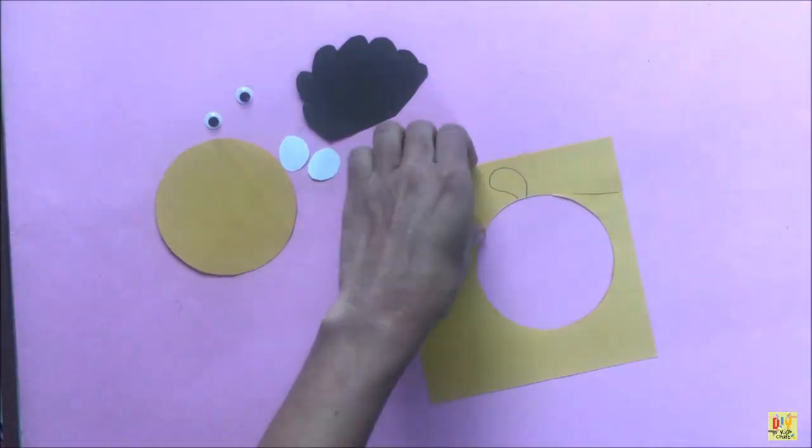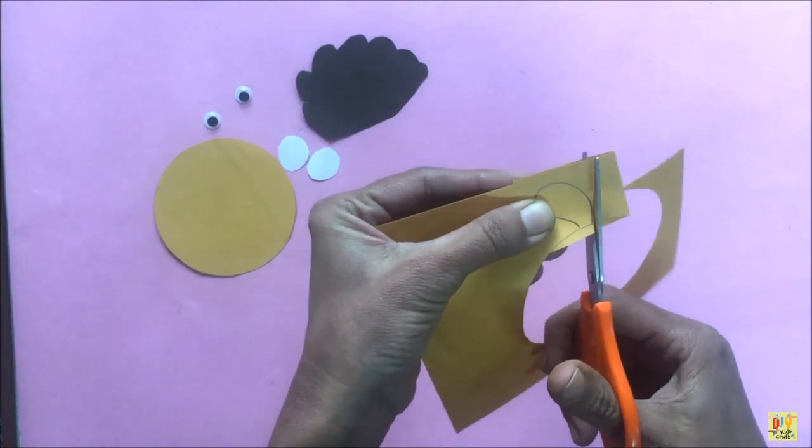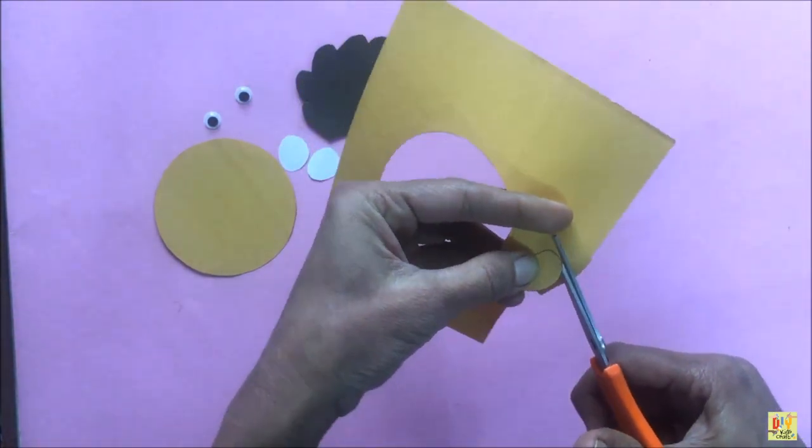Then, get a brown paper and draw a beak shape and cut it with a scissor. Make sure it's only small.